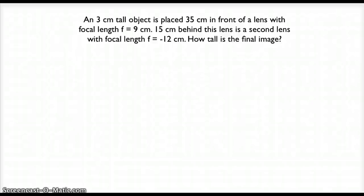Here's an example of solving a thin lens problem that involves two lenses placed in a row. A 3 centimeter tall object is placed 35 centimeters in front of a lens with focal length f equals 9 centimeters. 15 centimeters behind this lens is a second lens with a focal length f equals negative 12 centimeters. We want to know how tall the final image is.